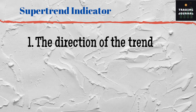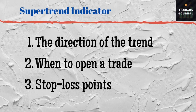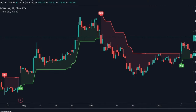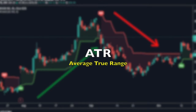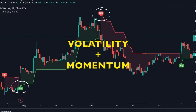If you are new to trading, supertrend indicator can be really helpful to you, because it both shows you the direction of the trend and when you should open a trade. Since it is really simple to use, it is one of the best indicators for new traders. Supertrend indicator is a trend following indicator, but it also uses the ATR, which is the average true range. And since it uses the ATR, it generates entries based on the volatility, in addition to momentum.